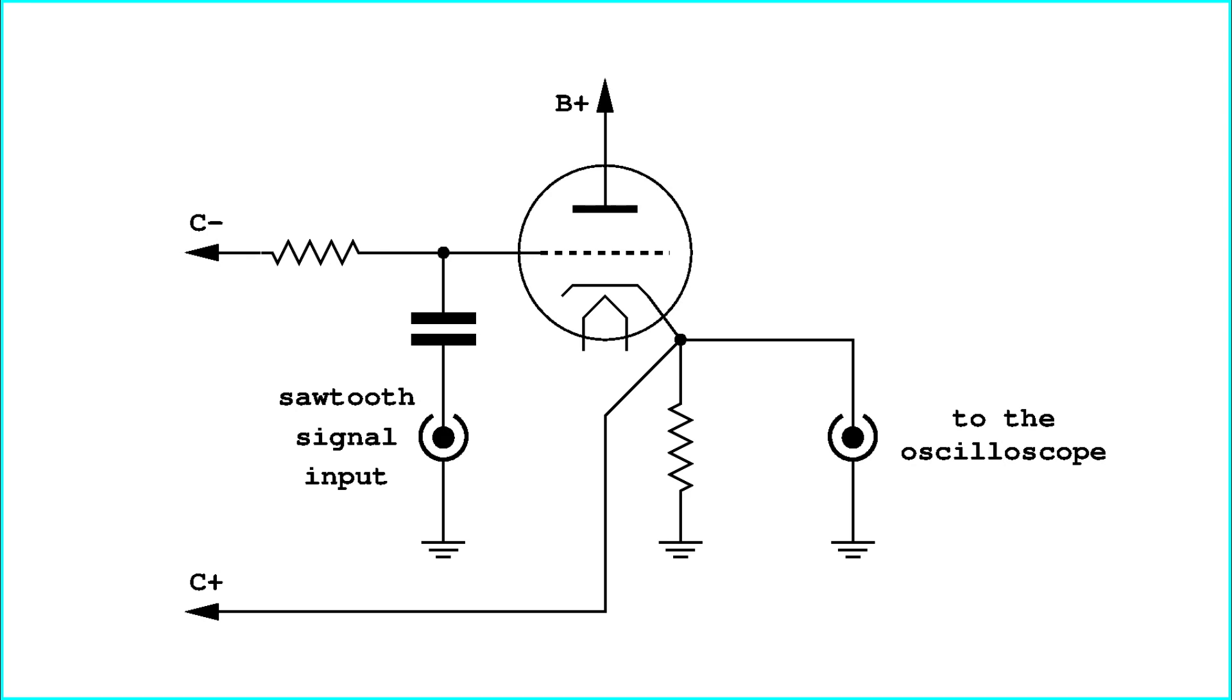This power supply should be fully isolated from the circuit ground and from any external ground, so that it can be connected between cathode and grid without consequences.